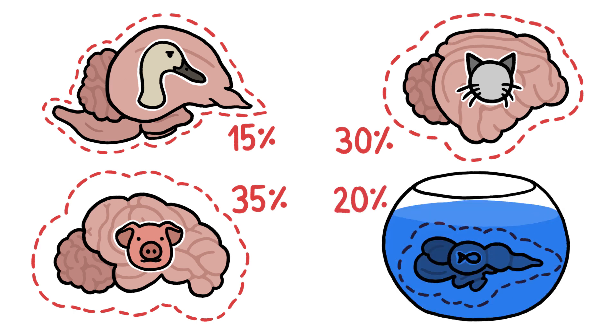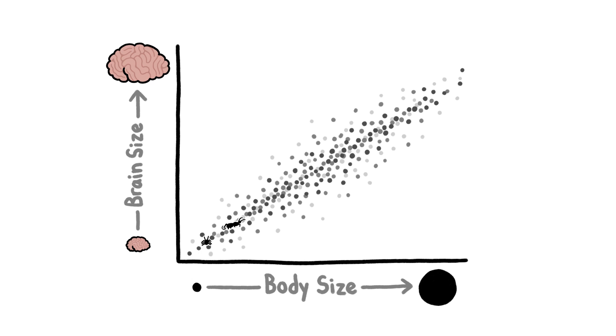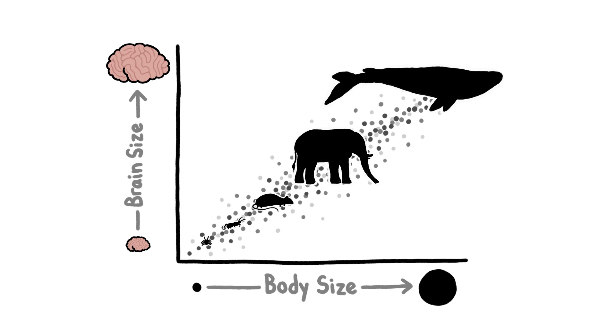Which is weird, because in general, the size of animals' brains and the size of their bodies is super tightly linked. Mites have smaller brains than ants, which have smaller brains than mice, which have smaller brains than elephants, and so on.